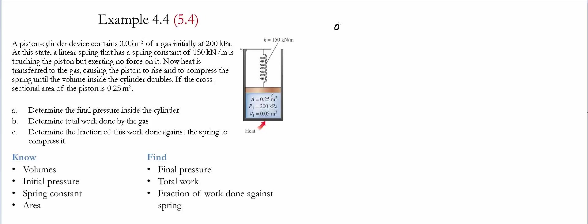Part A is asking us to find the final pressure. To find that total pressure, we have the initial pressure of 200 kilopascals plus the pressure provided against the spring. In order to find that spring pressure, we find the force applied into the spring, which is equal to the force applied by the system.